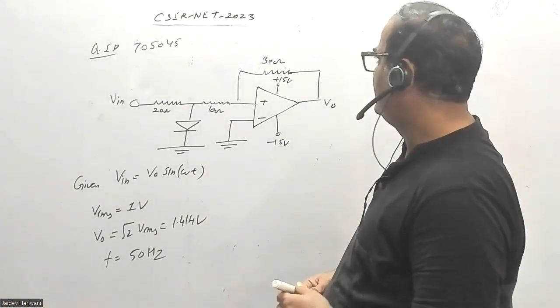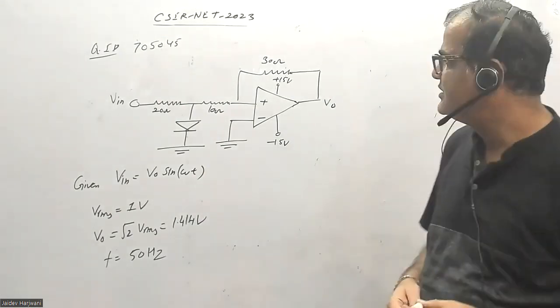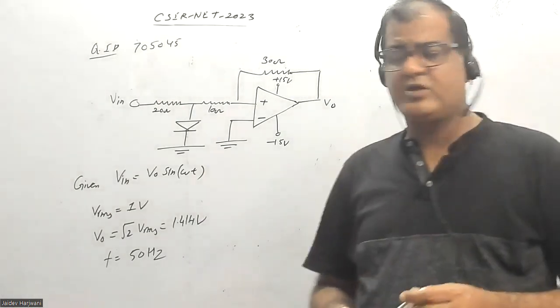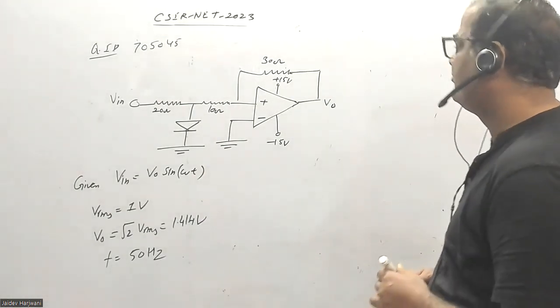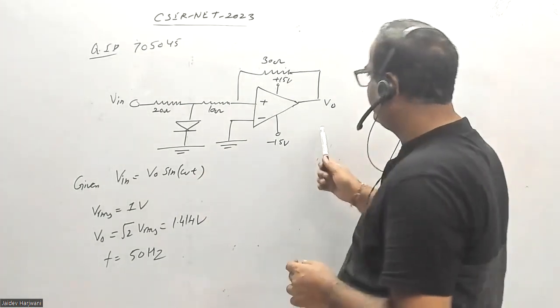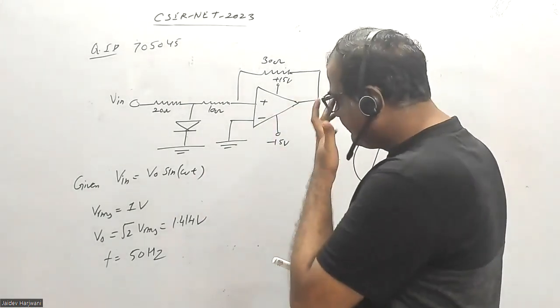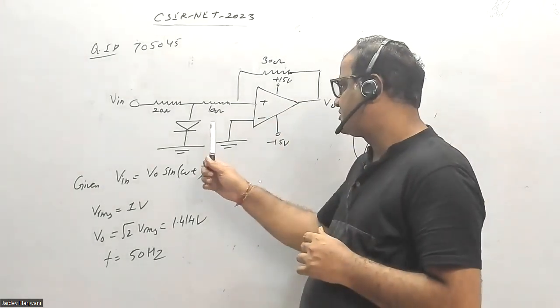Hello students, let us solve one more problem from CSIR NET 2023. The question ID is 705045. They have given you an op-amp circuit and are asking what is the maximum current that flows through this diode.